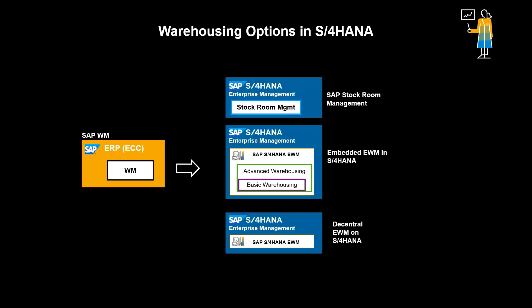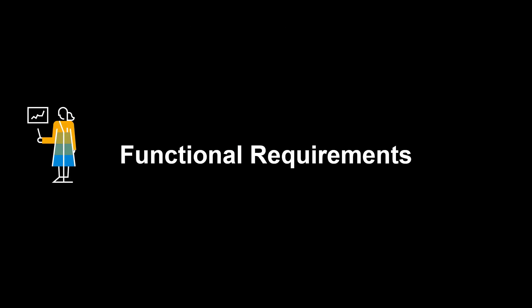Let us look a bit more at the options you have when embarking on your S4 HANA journey from a warehousing perspective. You could decide to move your current WM into stockroom management — later we will look at how to get going on that. A more strategic route would be to implement EWM, basic or advanced, depending on your functional requirements. EWM can be deployed embedded in S4 HANA enterprise management, or also decentralized on a separate instance. Please see another video of ours that takes you through the pros and cons on that topic. An important part of your decision process should include careful consideration of your functional requirements.